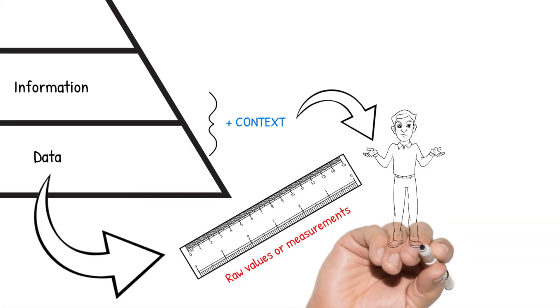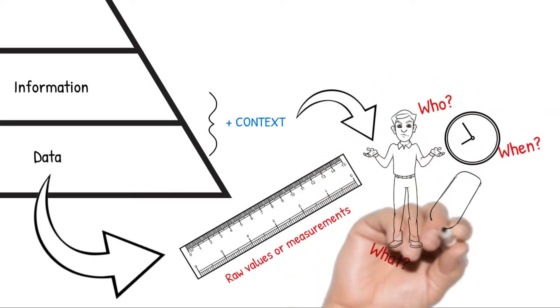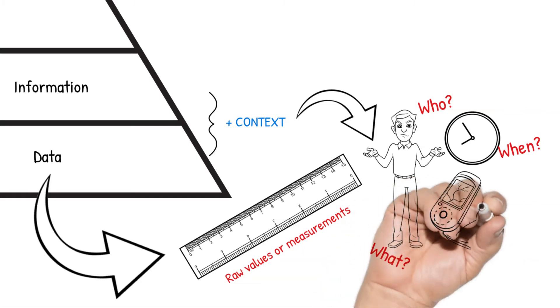This could be information such as who, what, when, and where. Notice that data and information are often objective in nature.